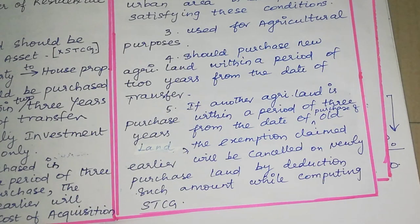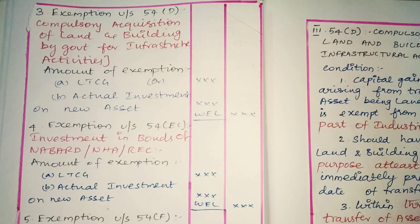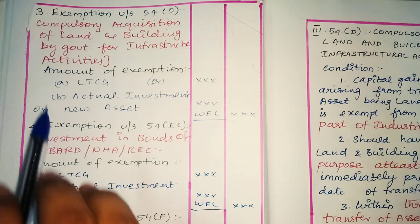With the withdrawal of exemption under Section 54B, the cost of acquisition of the newly acquired asset and the already exempted value will become zero. If you sell the asset, the full value will be taxable as capital gains.